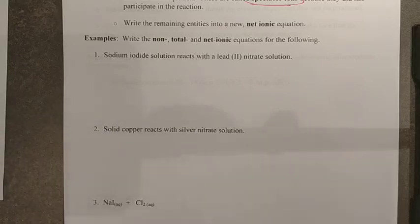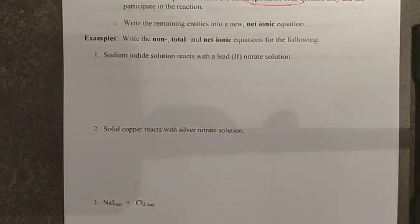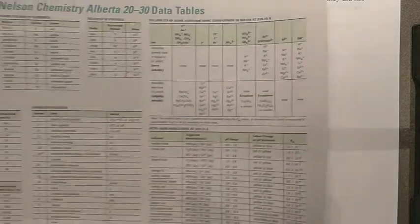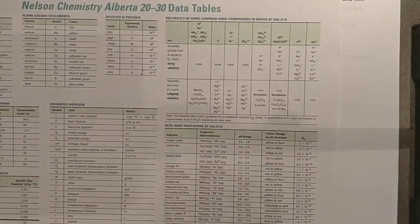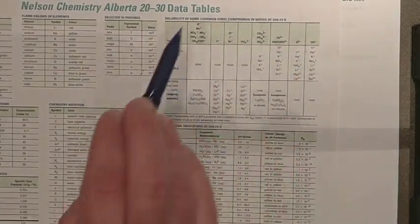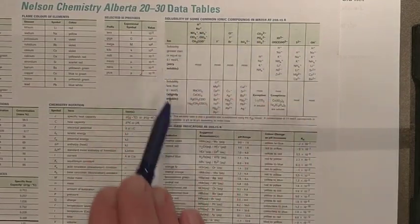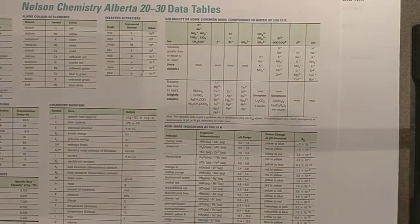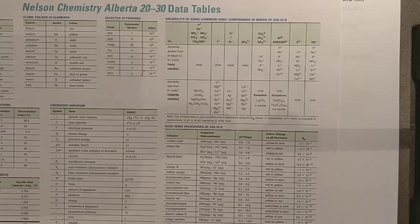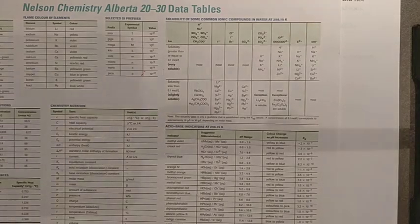Let's look at our first example for net ionic equations. For this you will need your data sheet and you're going to need to take a look at your ionic solubility chart here just so that we can make predictions on some of the ionic compounds that we might have here and whether or not they dissolve.